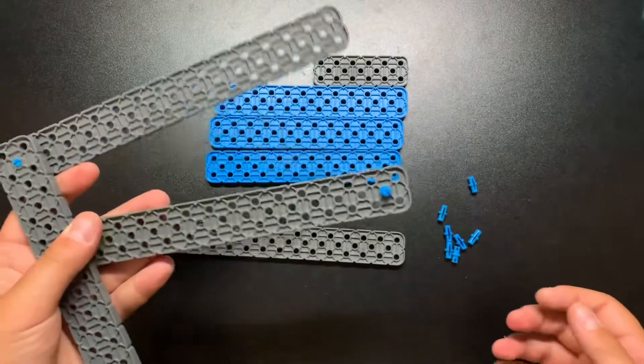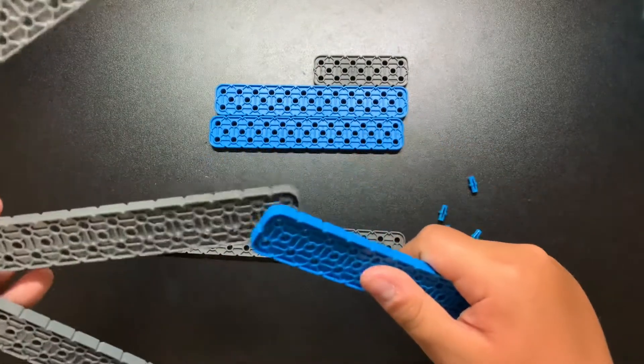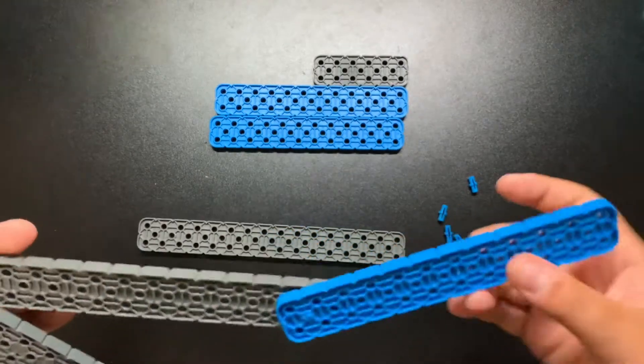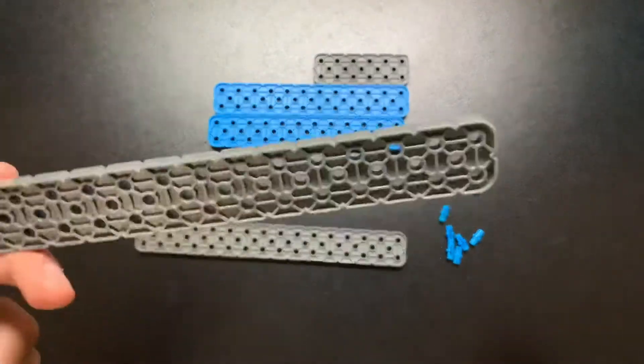Pop a connector pin in the bottom beam in the middle hole. Get your 2 by 12 beam and pop it right there. Now we're going to build on this beam.